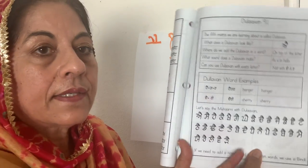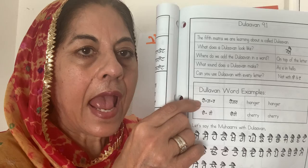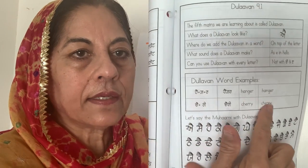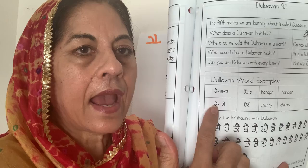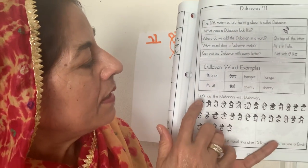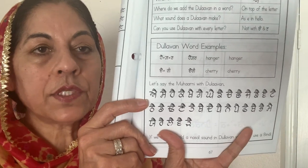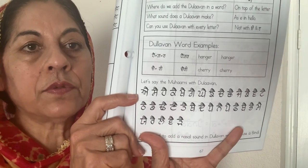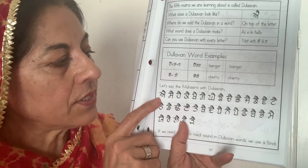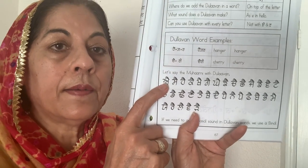Here are some sample words. This one says 'Hangar' — Hangar is a hangar. And this is 'Cherry.' Now this is the Moharni. Moharni is one of the most important things to say and learn when we are learning the sounds of the letters and the sounds of matras.